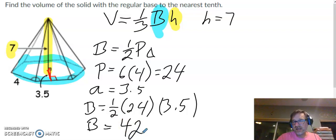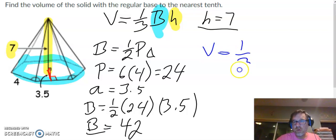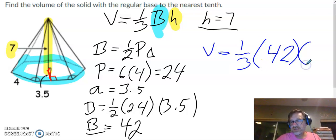Now we've got everything I need. I found height and I've got big B. Let's plug it into my volume formula. Volume equals one-third times 42 times 7. So I'm just going to put all that into the calculator. One-third times 42 times 7.